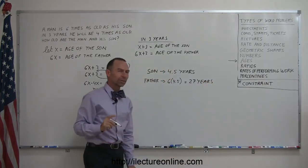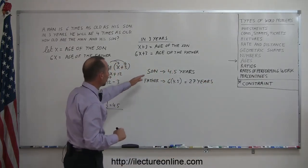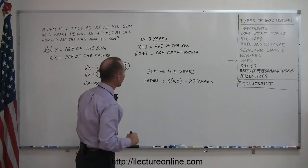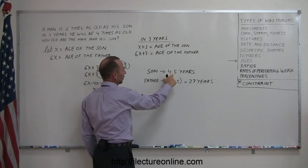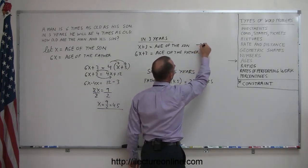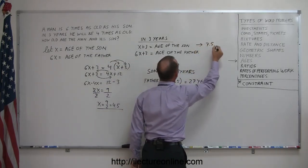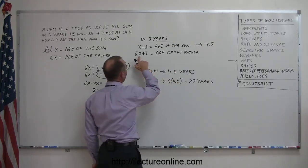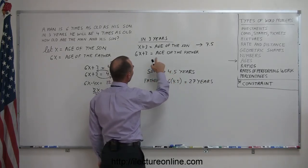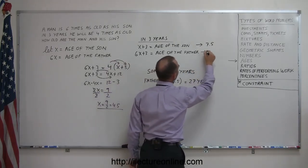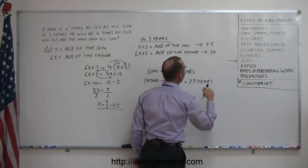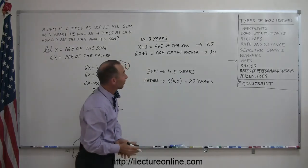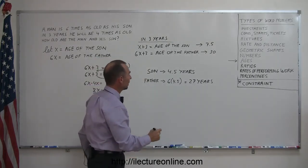And just to make sure we did this correctly, let's see if that still works for three years in the future. So three years in the future, the son's age will be x plus three, which is four and a half plus three, so that would be seven and a half years old. And 6x plus three, which is twenty-seven plus three, that would be thirty, and seven and a half is one-fourth of thirty, or thirty is four times seven and a half, and certainly yes, so we did it correctly.